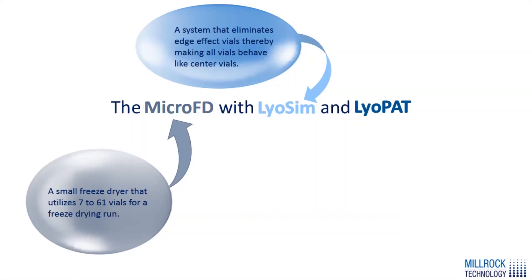This can't be done, for example, on a larger tray unit by just using a small array of vials, because that will not be representative of what a full tray will behave like. When we use the MicroFD with the LiOSIM, it eliminates the edge effect so all the vials behave like center vials, and we can use this as a representative cycle for a larger freeze dryer.